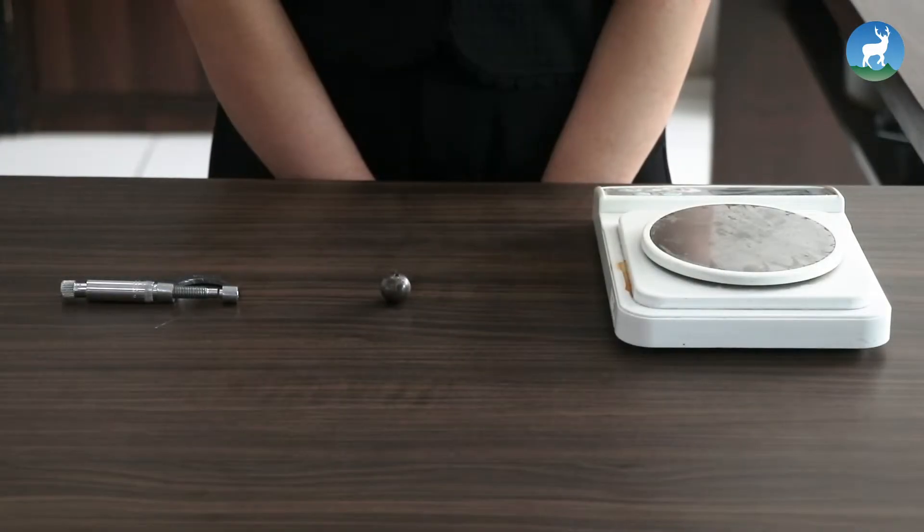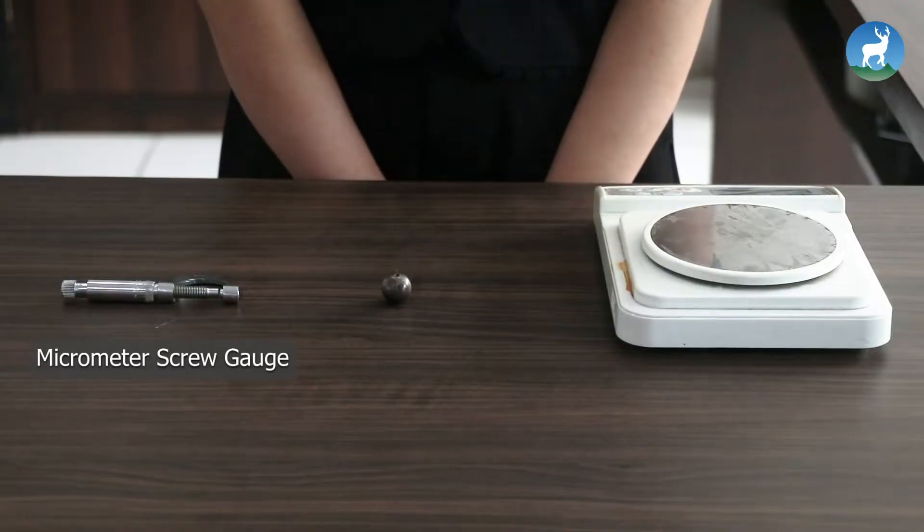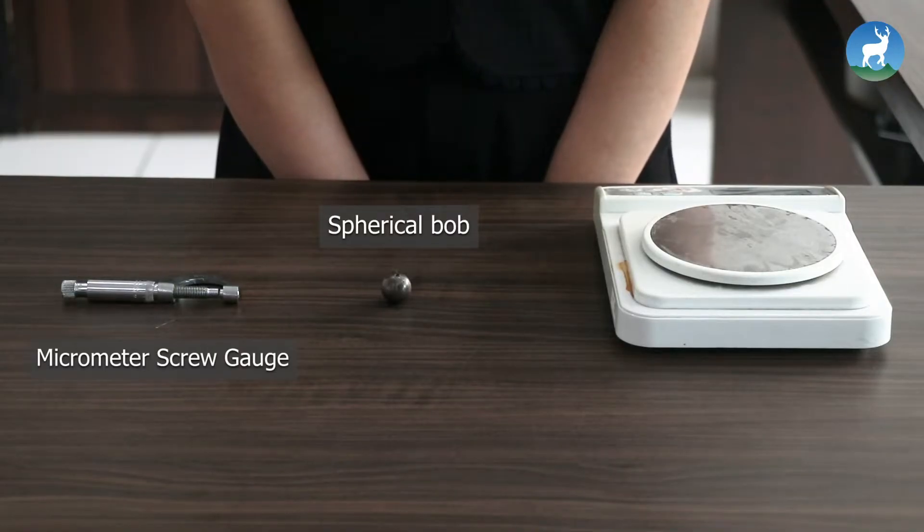The apparatus required for conducting the experiments are micrometer screw gauge, spherical bob, and a digital balance.